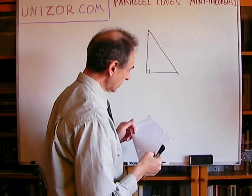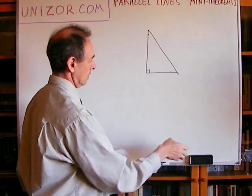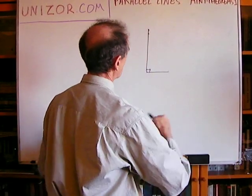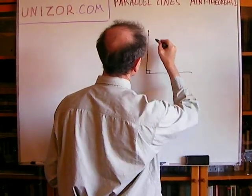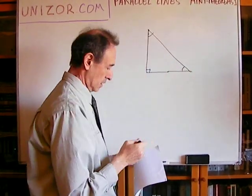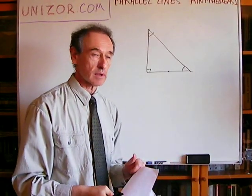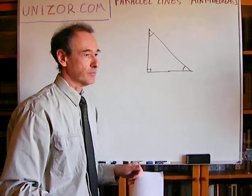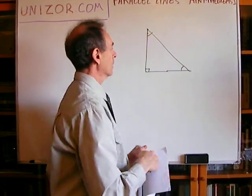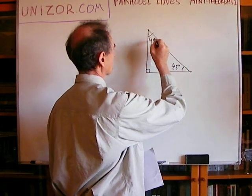In a right isosceles triangle, both acute angles are 45 degrees. If it's a right isosceles triangle, two legs are equal in size, which means the two base angles are congruent to each other because it is isosceles. Since they sum to 90 degrees, each one must be 45 degrees.